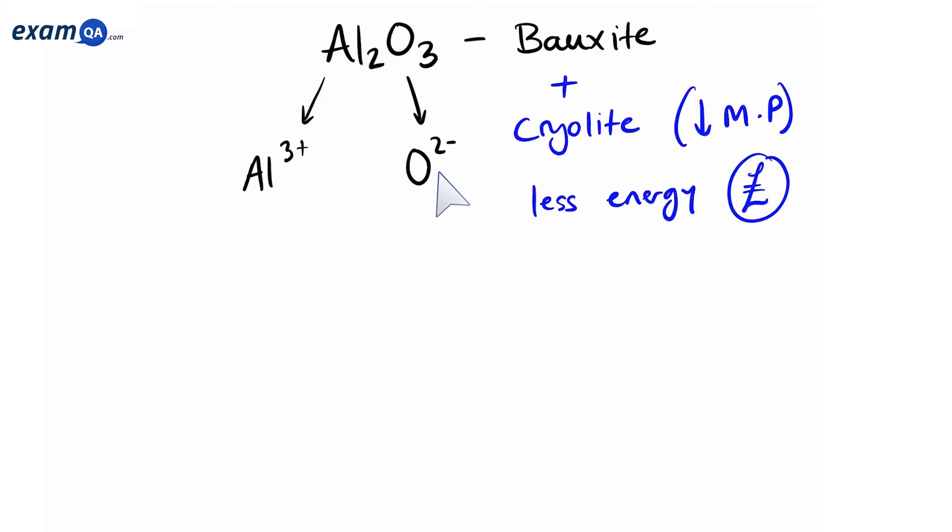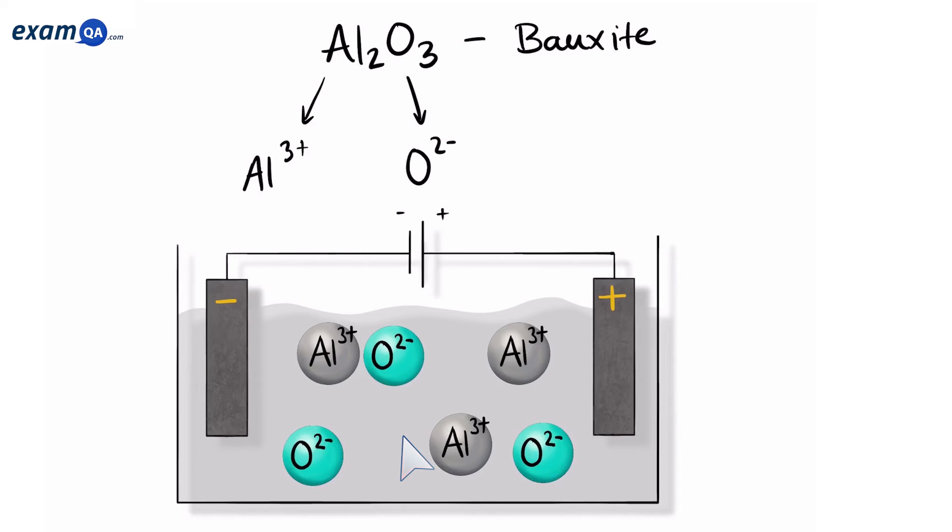Now let's have a look at how this would look like in a tank. After heating, the molten aluminium oxide separates into its ions. These are now able to move around freely. Since opposites attract, the negatively charged oxygen ions move towards the anode, and the positively charged aluminium ions move towards the cathode.